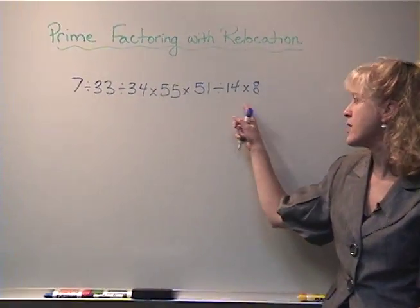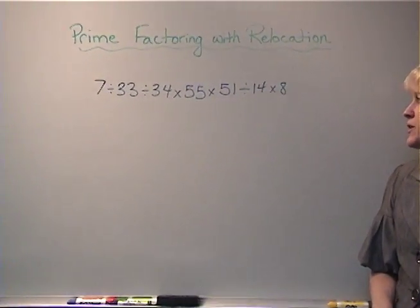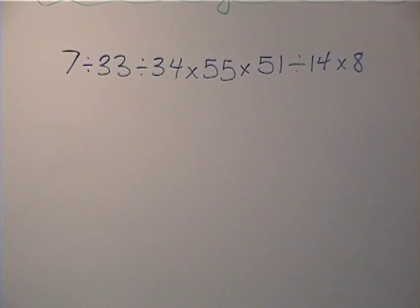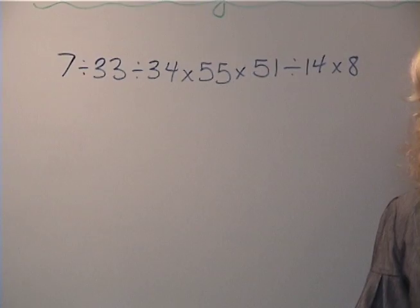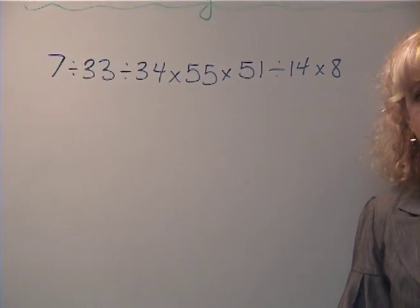Let's have a look at the very first question: 7 divided by 33 divided by 34 times 55 times 51 divided by 14 times 8. It looks like you have to use a calculator somehow, but you don't.